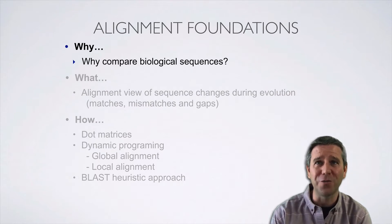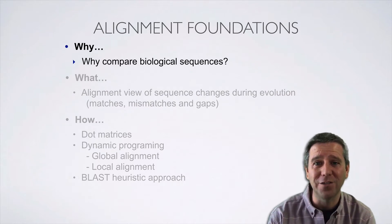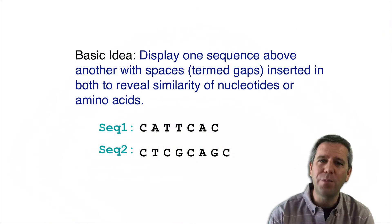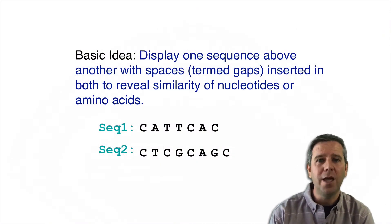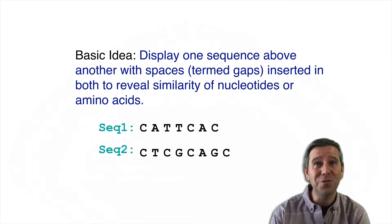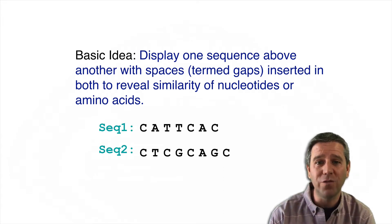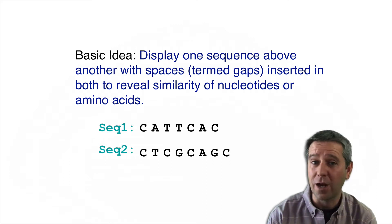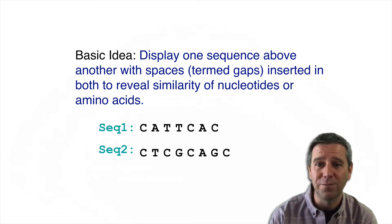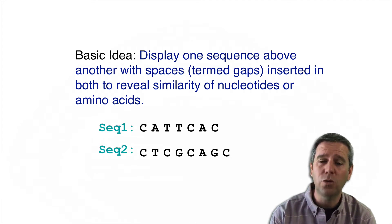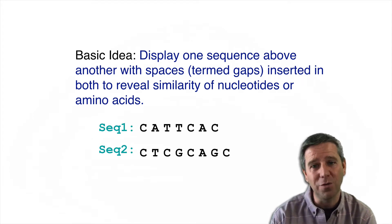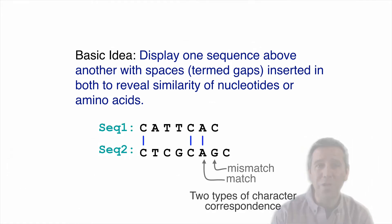So let's get started with the why of comparing biological sequences. The basic idea is pretty simple: we want to display a pair of sequences one above the other, with spaces termed gaps inserted into both, to reveal the similarity of the actual characters — whether those characters are nucleotides or amino acids in the case of proteins. Considering two short nucleotide sequence examples, Seq1 and Seq2, we can consider two types of character correspondence: a match, where the two characters are the same, and a mismatch, where they differ.